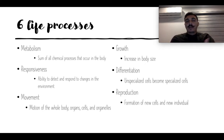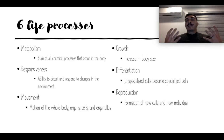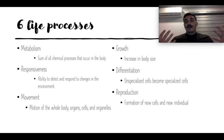A living organism needs to have these six processes to be considered living. First, we need to have metabolism — all the chemical processes inside our body, the sum of all of those occurring inside our body. A living organism also needs to be responsive — to adapt or detect changes in the outside environment. And a living organism needs to be able to move: the motion of the whole body, the organs, the cells, or the organelles inside the cells.